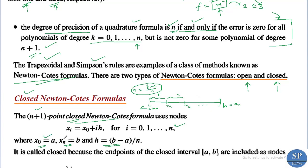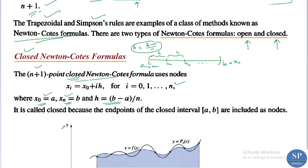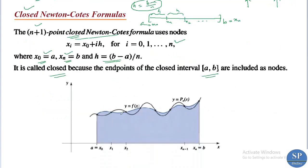We are taking x_0 = a and x_n = b. It is called the closed Newton-Cotes formula because the endpoints of the closed interval [a, b] are included as nodes — that is, we are using the endpoints a and b as nodes. This is the pictorial representation of this formula.